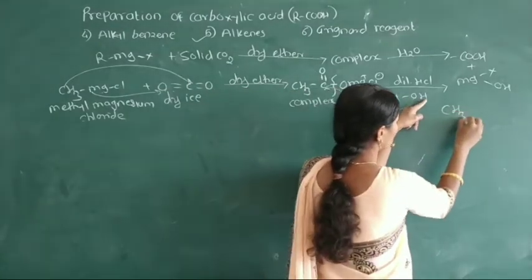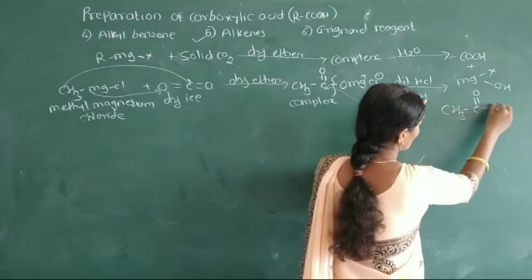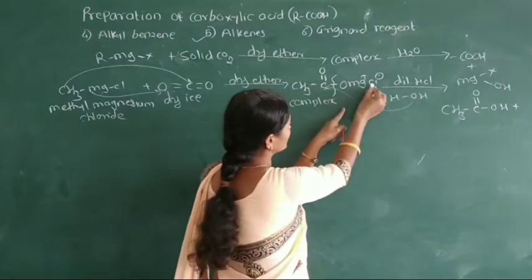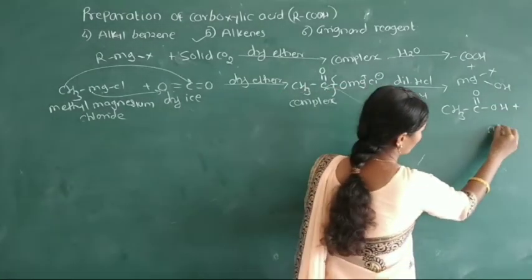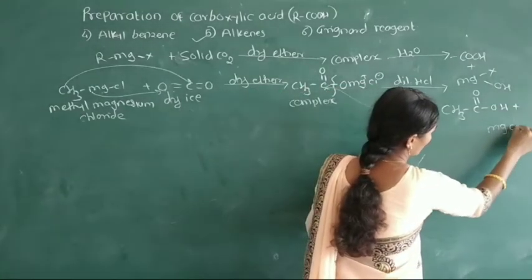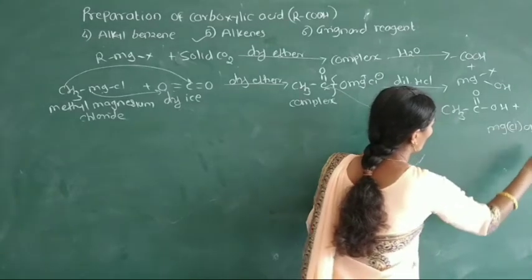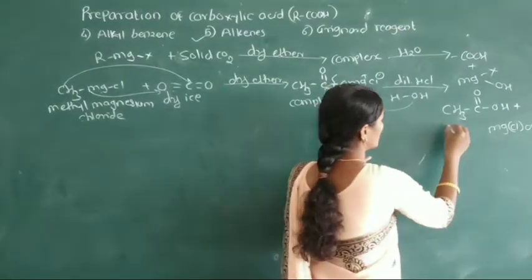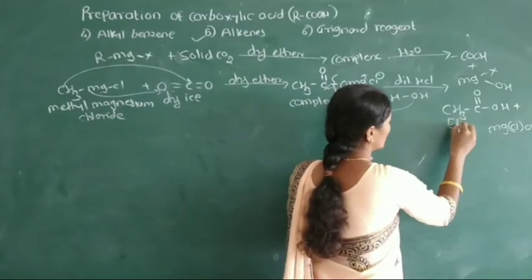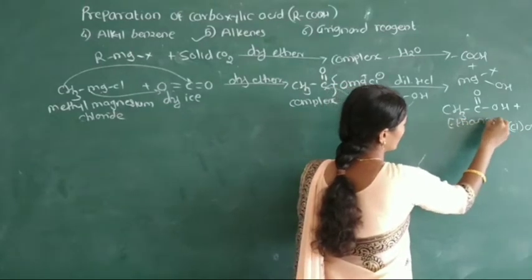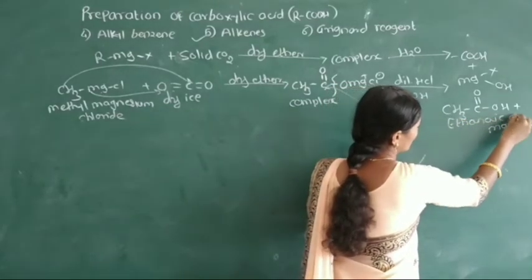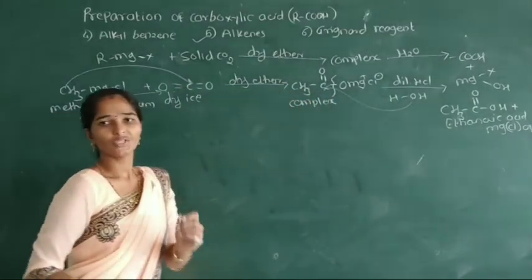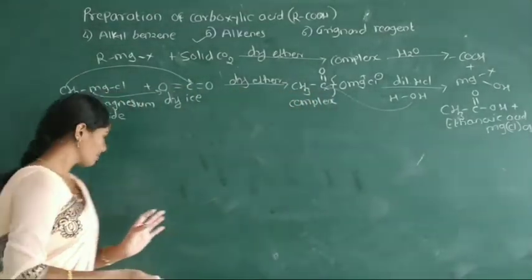Here formation of CH3COOH plus MgClOH. This gives us a good carbon chain setting. Now we see another example — we will take an aromatic Grignard reagent.